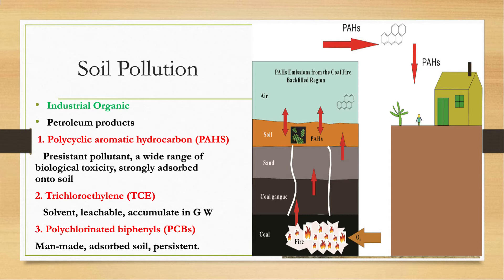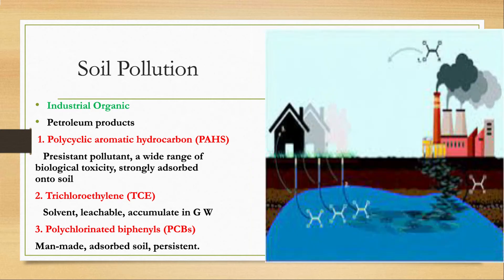Another industrial organic pollutant is TCE, trichloroethylene, which is a solvent used in manufacturing processes. TCE is leachable, so it accumulates in groundwater. It readily passes through soil and contaminates groundwater, causing many health problems including kidney cancer.